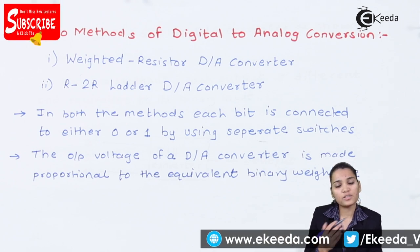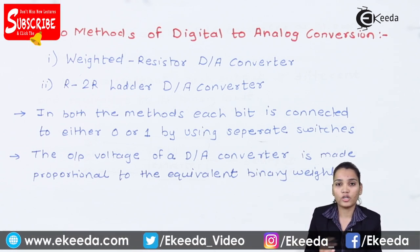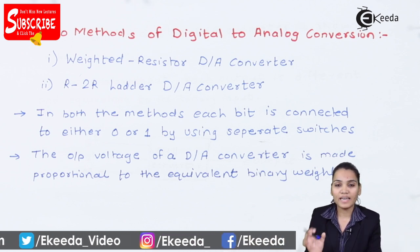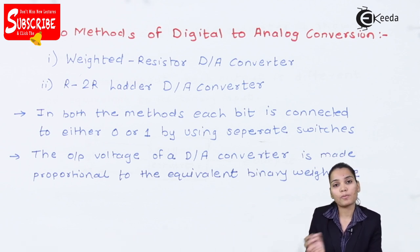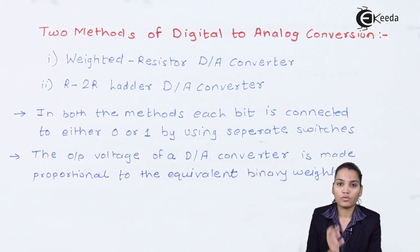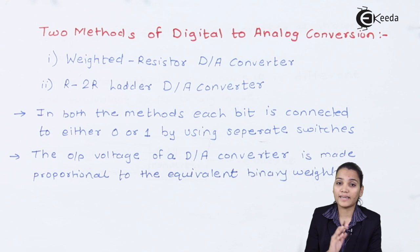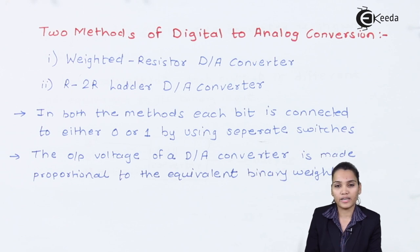In both methods, each bit can be either connected to 0 or 1, and the output of the DAC converter will always be in the form of an analog value. That analog value will be directly proportional to the input binary voltage — for example, if the input binary voltage is 2 raised to 4, then the analog value will be proportional to that. In the next video we are going to see the weighted resistor method and the R-2R ladder method in detail.